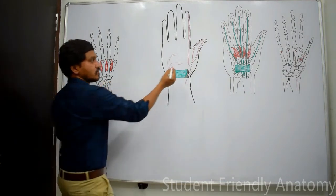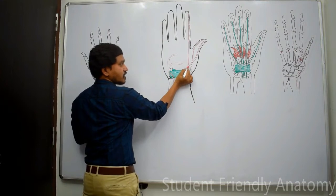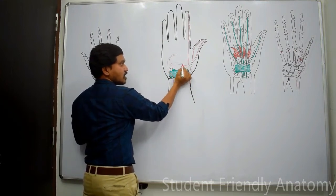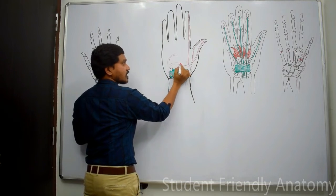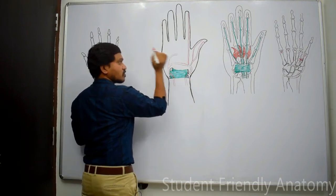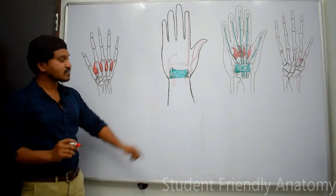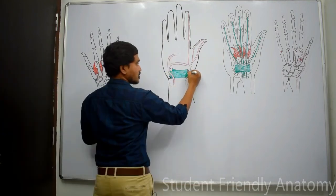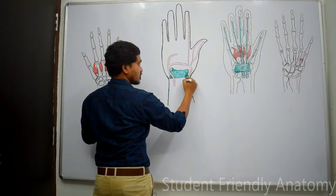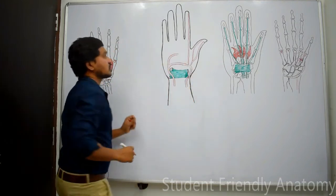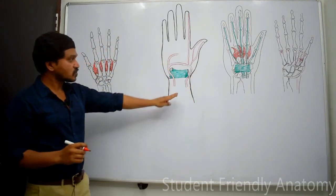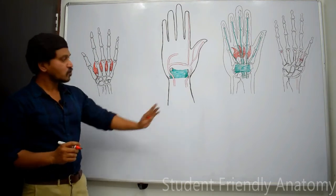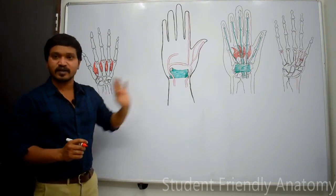After giving these two branches, the main continuation of the radial artery anastomoses with the deep branch of the ulnar artery to complete the deep palmar arch. Additionally, before winding around the lateral part of the wrist, the radial artery gives a superficial branch that passes superficial to the flexor retinaculum. This is the superficial branch of the radial artery.